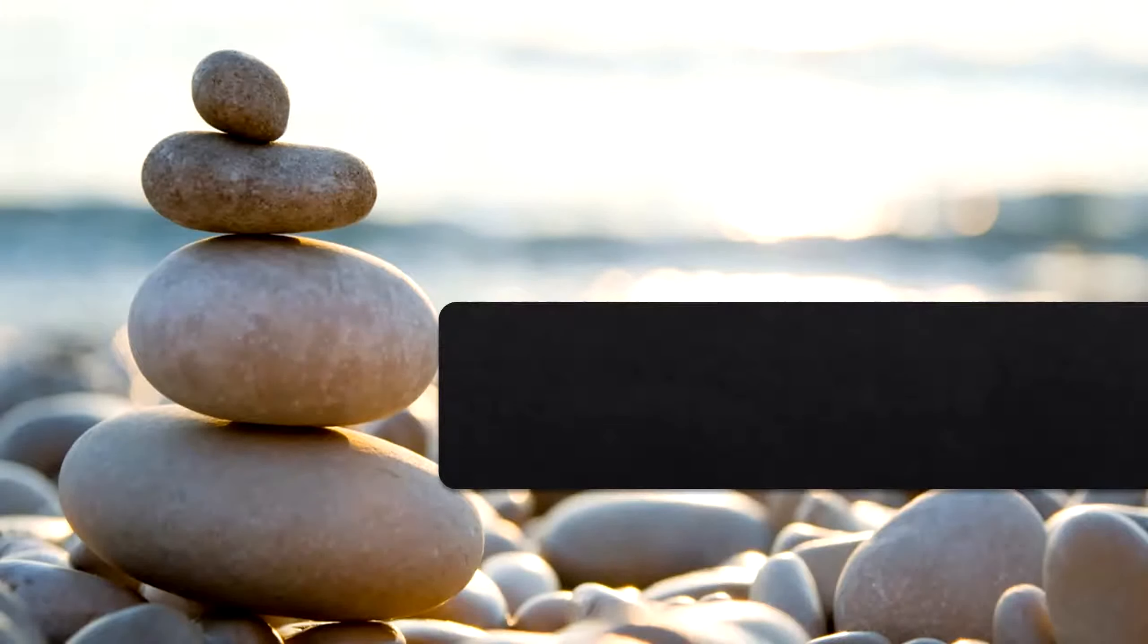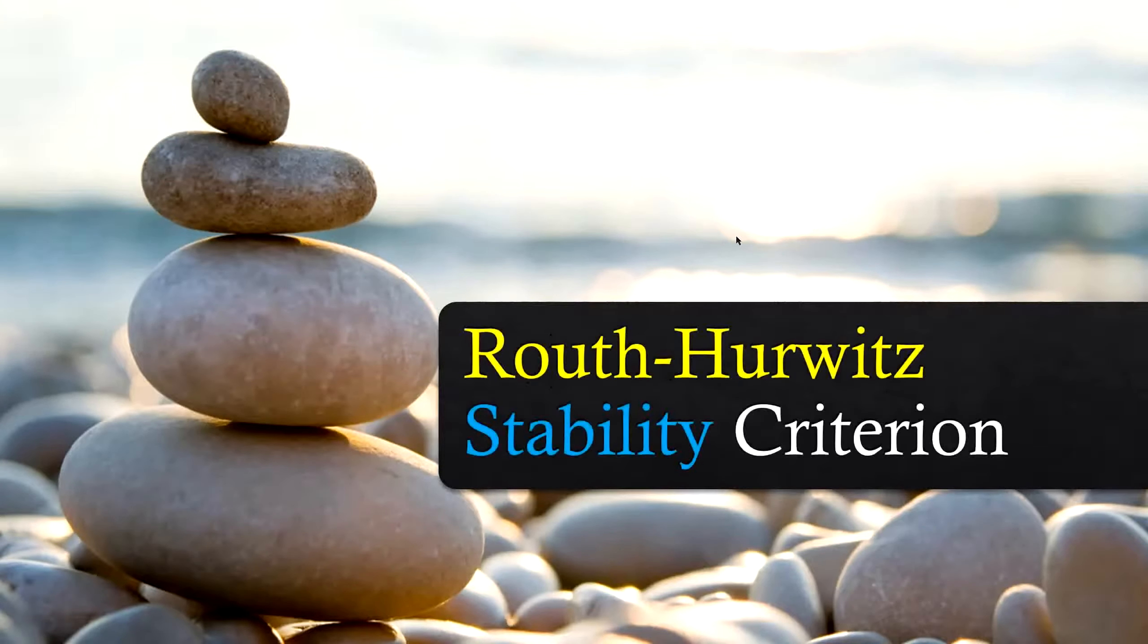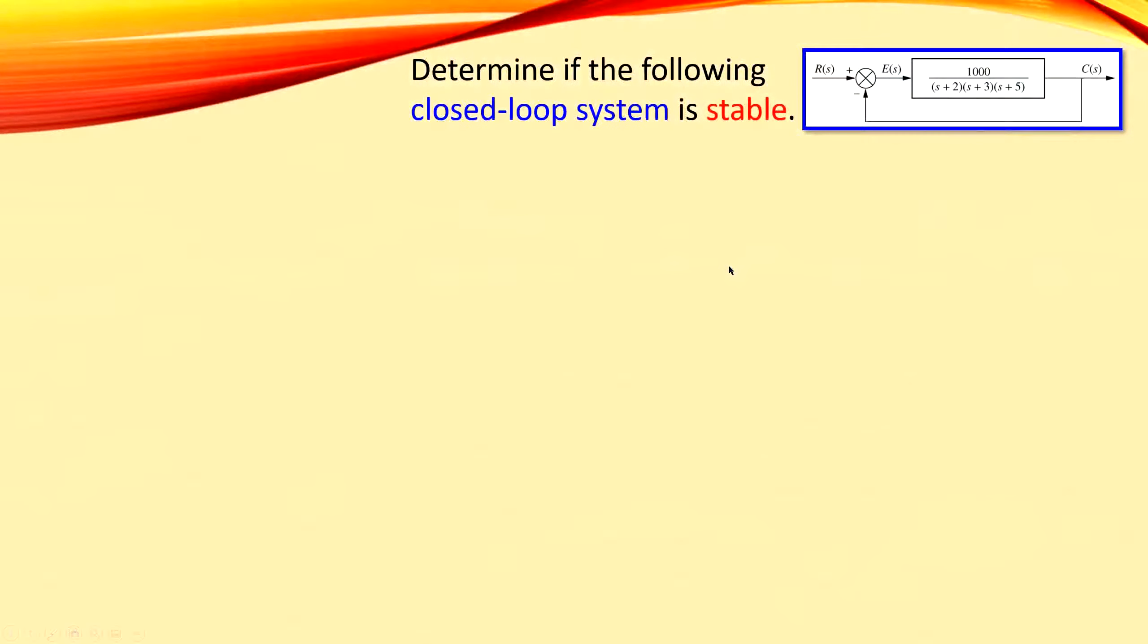Hi everyone and welcome to a new video about control system topics. We continue with the subject of stability, and in particular we will continue with the Routh-Hurwitz stability criterion. We have the following situation: determine if the following closed loop system is stable, and we have the following open loop system in a unity gain feedback configuration as shown here.